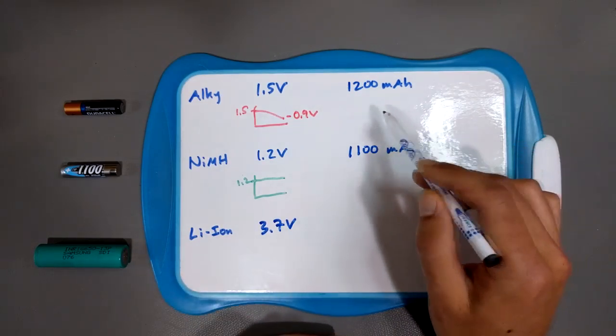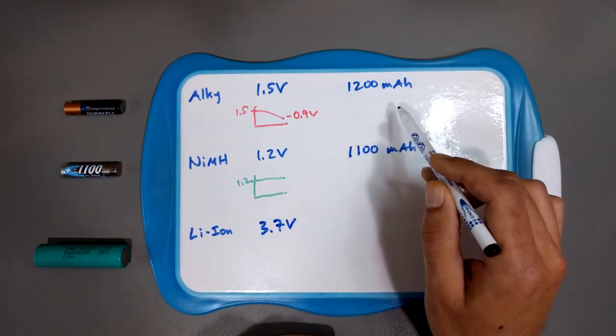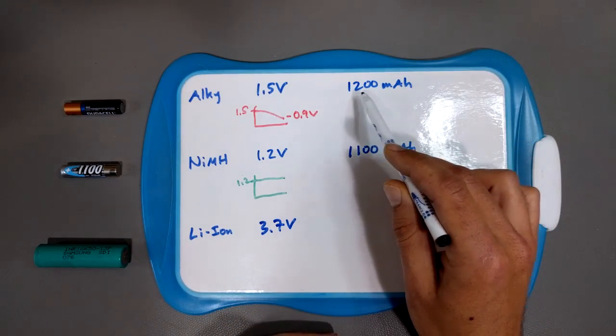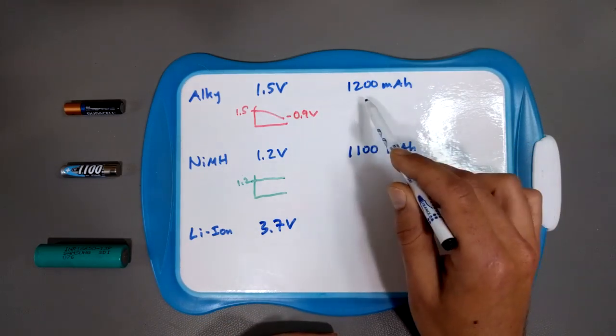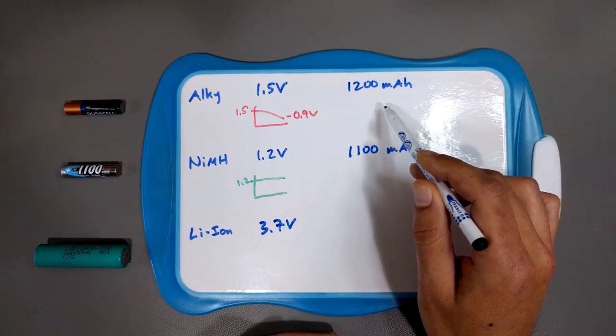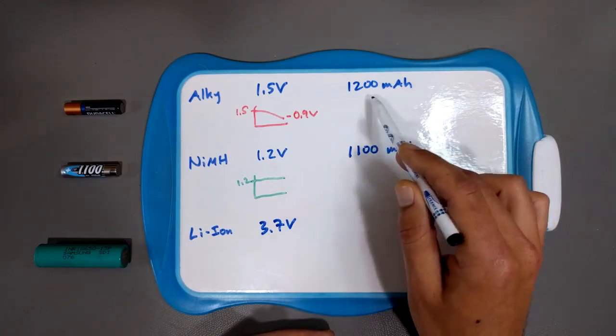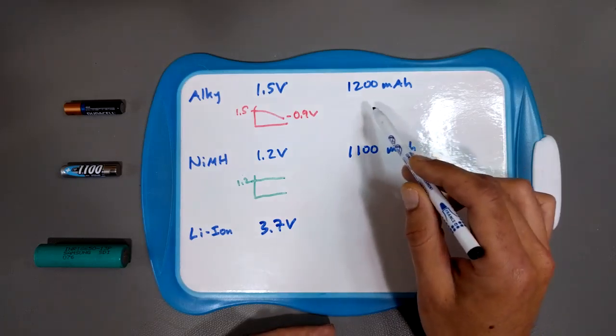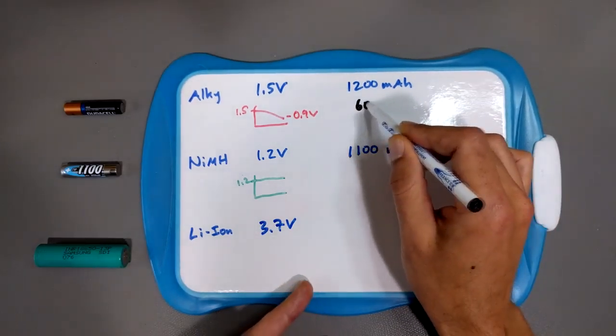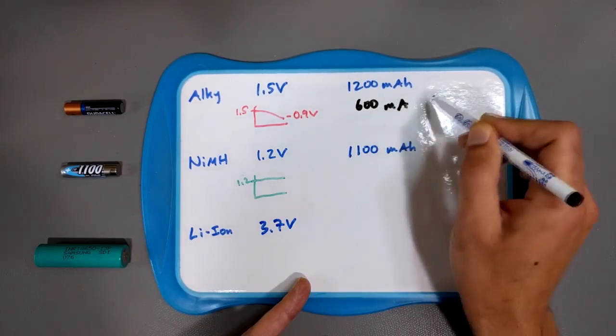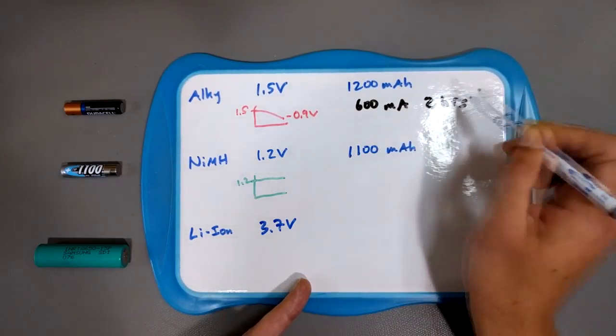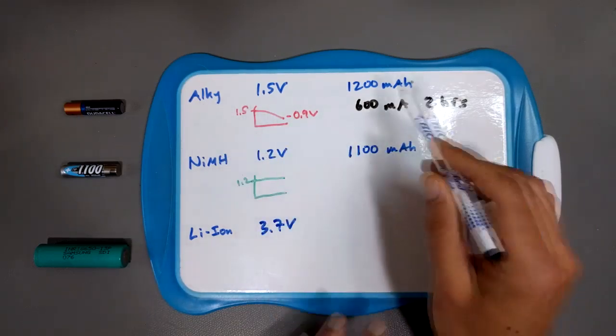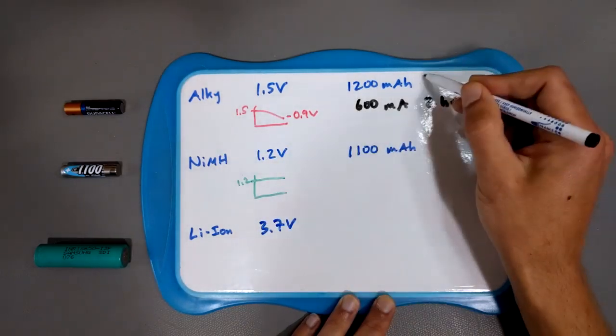So 1,200 milliamp hours technically means it's 1,200 milliamps over one hour, or 120 milliamps over 10 hours, or 12 milliamps over 100 hours. So in low current draw applications, like a small gizmo that doesn't require much juice, alkalines are better. But if you actually try to pull lots of current from an alkaline, instead of say 12 or 50 milliamps, you decide, well, I want to pull 120 milliamps. I want to pull 600 milliamps.